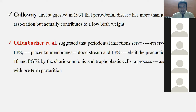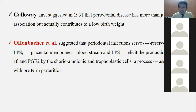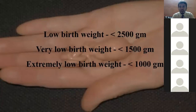Offenbacher suggested how periodontal disease is responsible as a focus of infection, releasing endotoxins — polysaccharides — which cross the placental membranes through the bloodstream and elicit production of inflammatory mediators, leading to disease and specifically to preterm parturition.